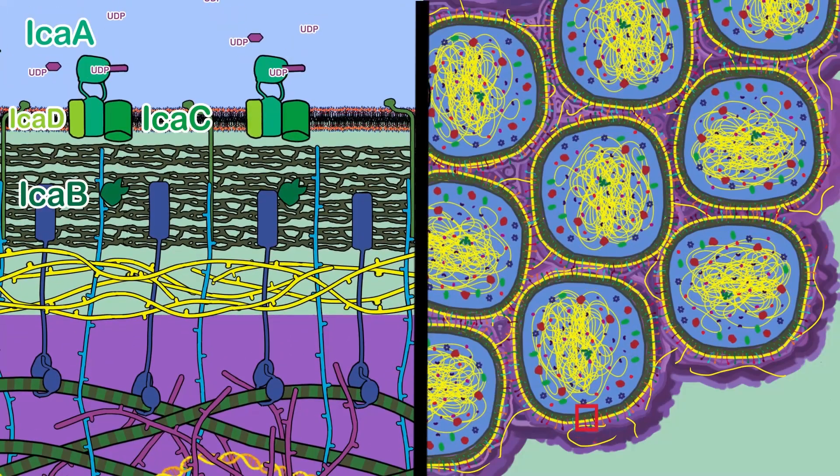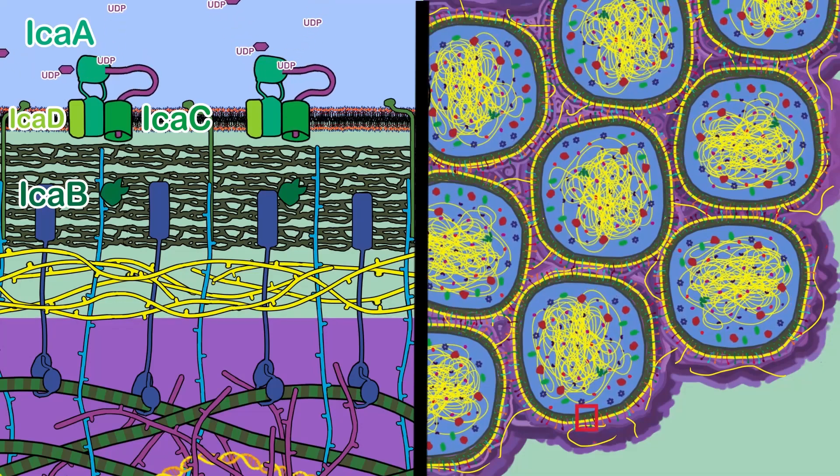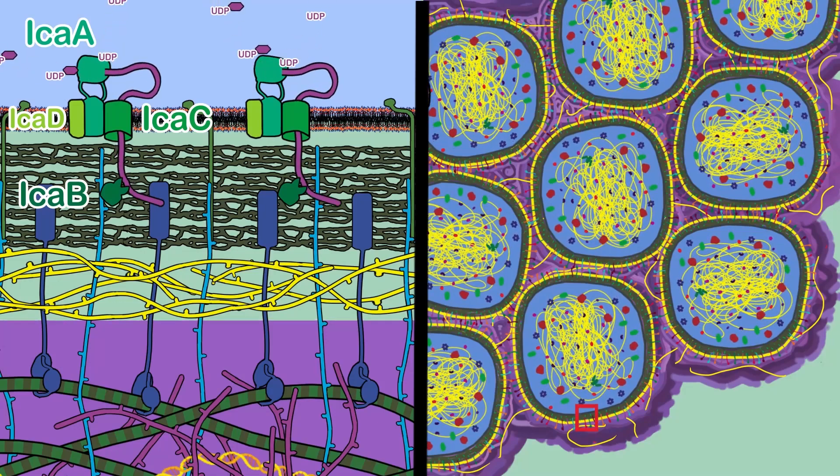ICAA and ICAD take molecules of N-acetylglucosamine and synthesize polymers of 20 monomers, which are then transported out of the cell by ICAC.